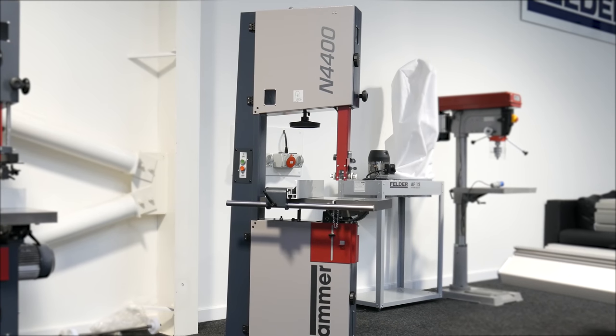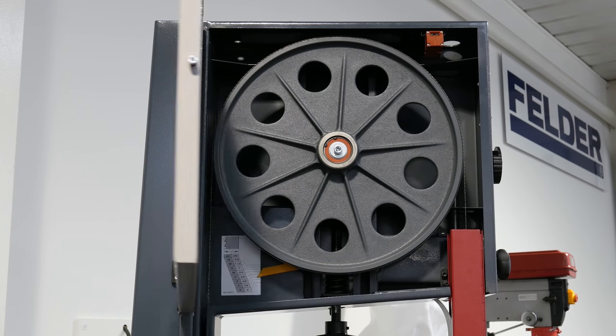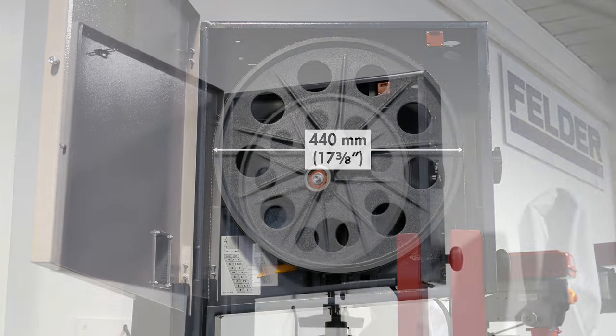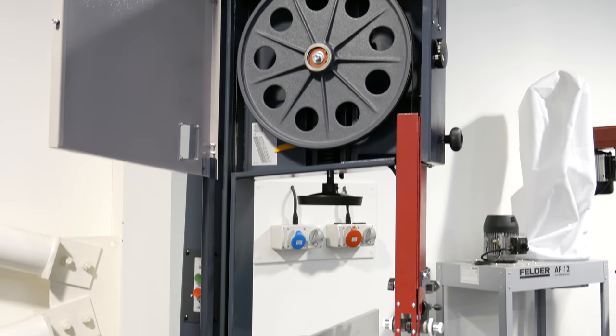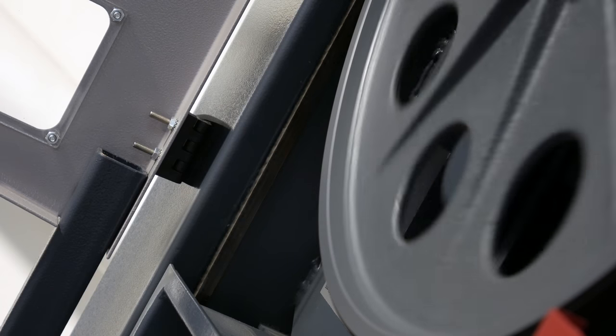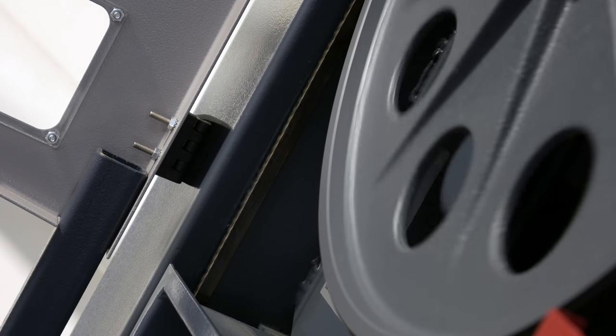As its name suggests, the N4400 has two solid wheels that measure 440mm in diameter, and the large distance between the wheel cast axles makes it possible to use longer blades, which produce smooth movement with more teeth to ensure a prolonged working life.